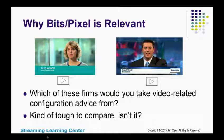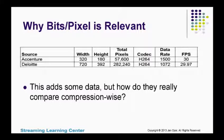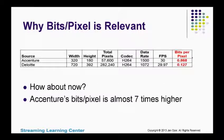We've got two video files here from two different accounting firms — one from Deloitte on the right, and one from Accenture on the left. Which of these firms would you take compression-related advice from? Just looking at the images, it's tough to compare — they both look reasonably similar quality. Now, the Accenture video was 320 by 180 and encoded at a data rate of 1.5 megabits per second. The Deloitte video is much larger resolution and has even a lower data rate. When we include bits per pixel, we see that Accenture is encoding almost seven times higher on a bits per pixel basis than Deloitte.